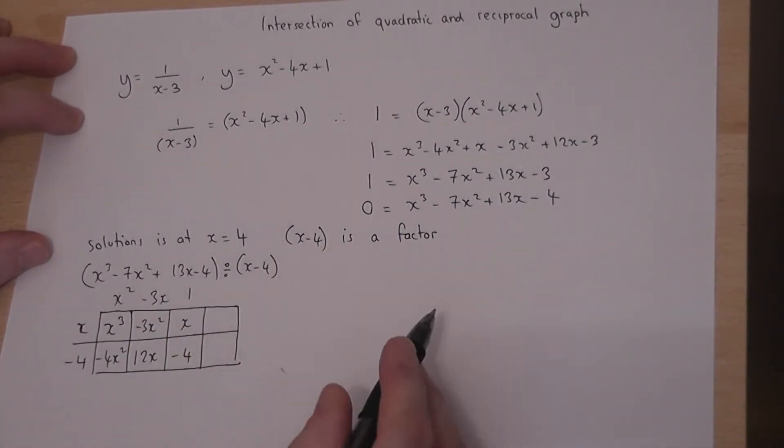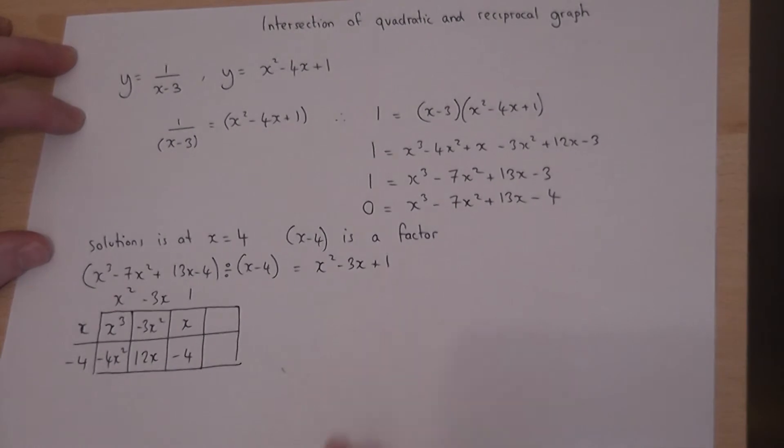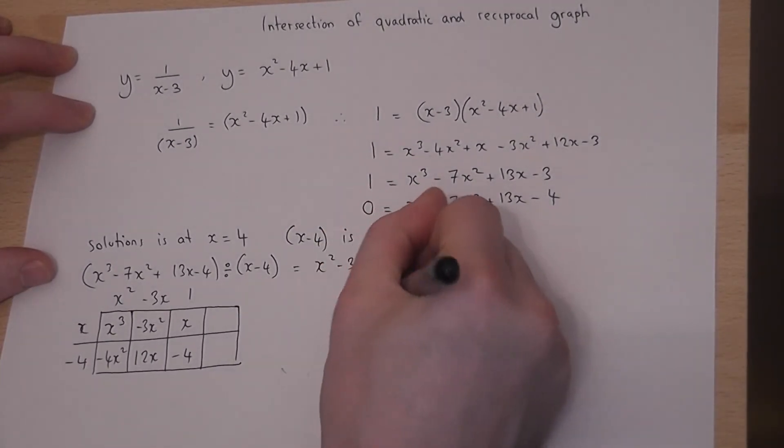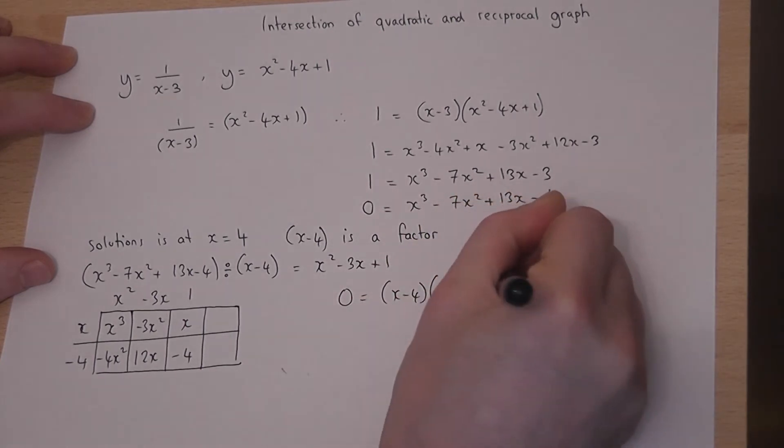if I divide through by (x-4), I'm left with the top line, which is x² - 3x + 1. So therefore, this whole thing here factorizes to (x-4) bracket (x² - 3x + 1).